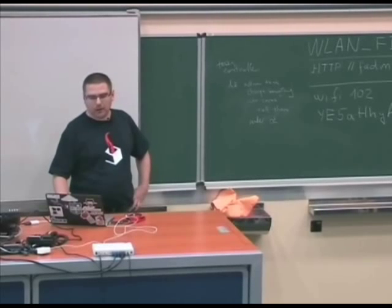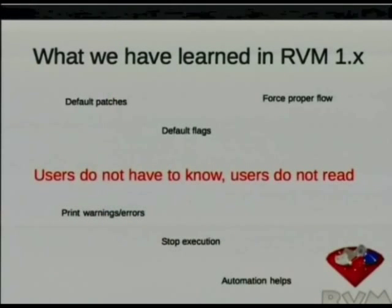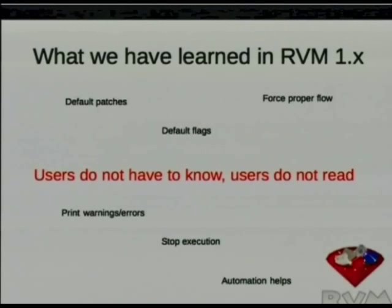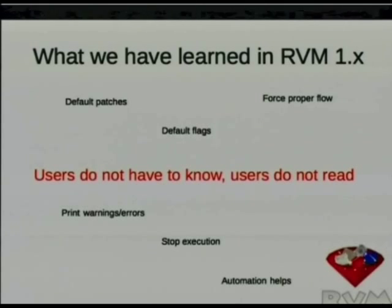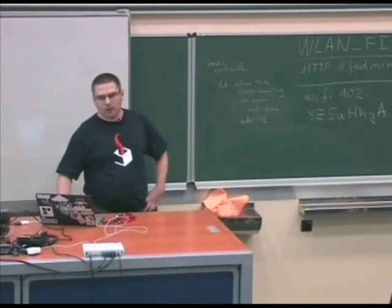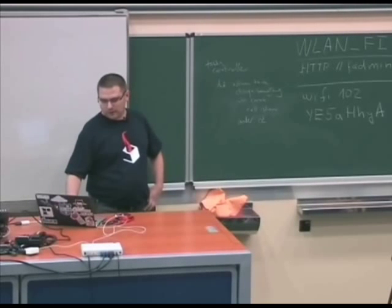This often ends in the statement: 'RVM doesn't work.' And I know it. We try to fix it by providing proper behaviors, default behaviors, and patches. We give flags to force proper flow, but there is a lot of information. Even when a warning is displayed, users don't always read it, and it's not always easy to understand. Even stopping execution doesn't work — users skip that step because there's too much to process.